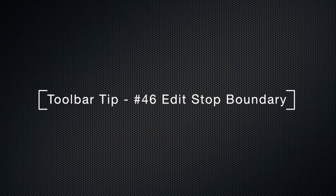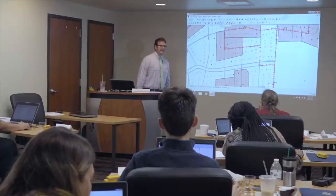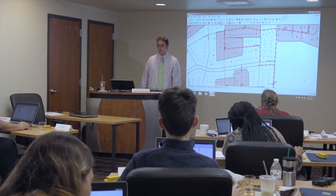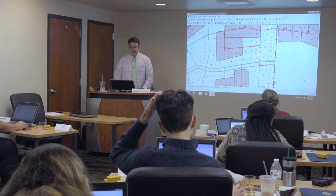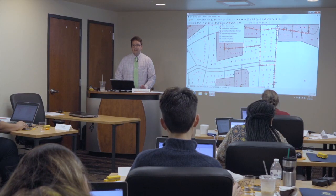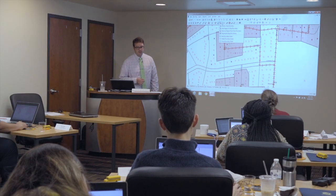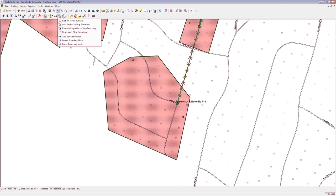The next tool is Edit Stop Boundary, which is number 46 in your program. If you click on that little arrow next to it, you can see that there are seven total options. Let's go with Redraw Stop Boundary first.